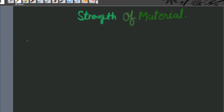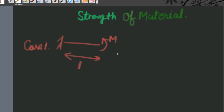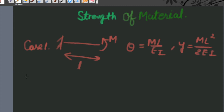Case number one: when a cantilever beam is subjected to a moment M at the free end and its length is L, then the angle of twist theta is given by ML upon EI, and deflection Y is given by ML squared upon 2EI.